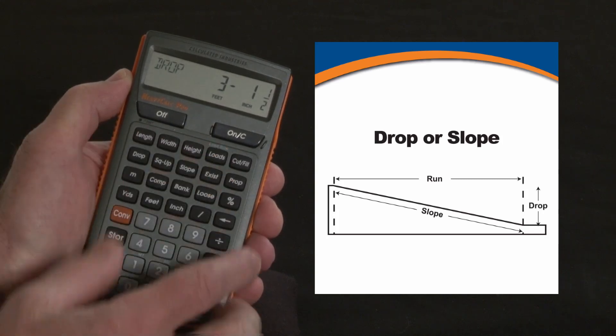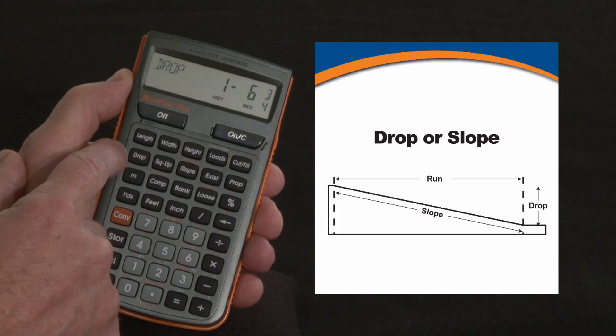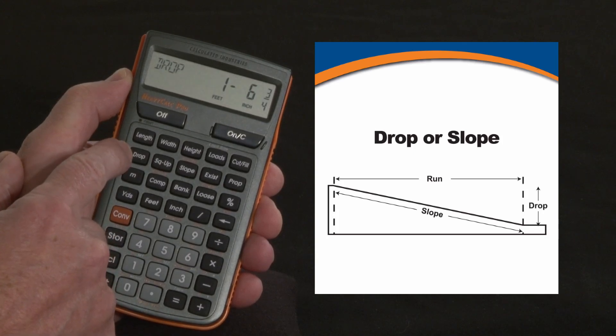Now if you say I don't want to dig down that deep, let's look at it for an eighth inch. One eighth inch is my drop, and you're going to be about one foot six and three quarters lower at the far end than this end.